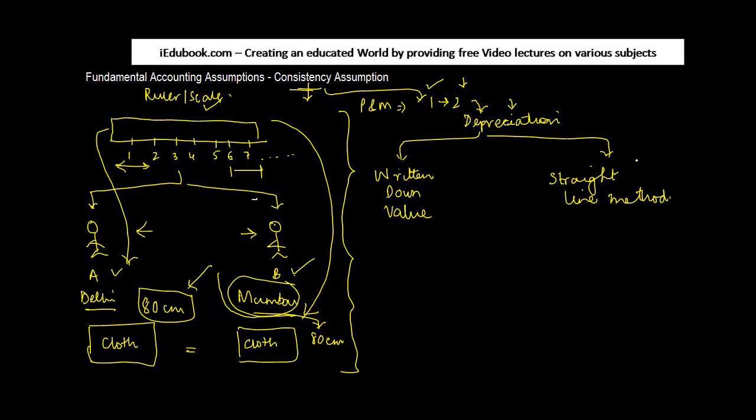What the consistency assumption means is that the accounting practices followed - let's say company A follows the written down value method of charging depreciation - the consistency assumption says that if you charge depreciation according to the first method in year one, you should keep on charging depreciation according to the same method in year two, year three, year four. You cannot switch over methods.